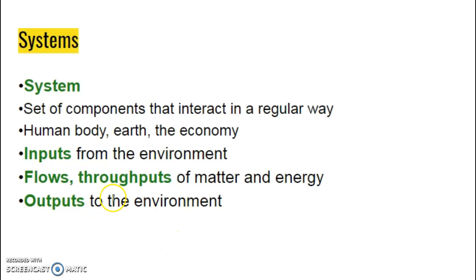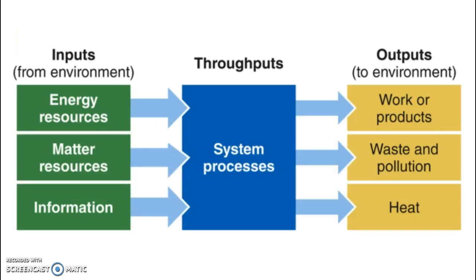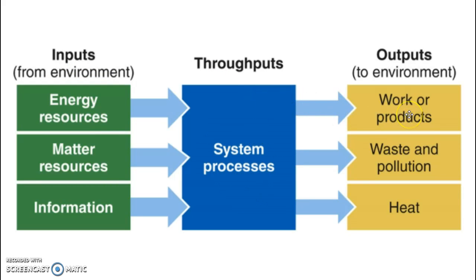Some terms that relate to systems: inputs are things that come into the system; flows and throughputs are things that go through the system; and outputs are things that come out of the system into the surrounding area. For example, think about sunlight coming in — we do something through photosynthesis, and we create sugar and oxygen. So things come in, some stuff happens, and things go out.